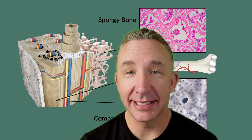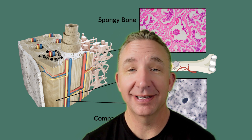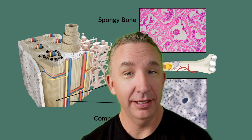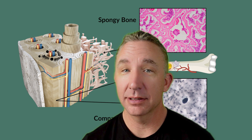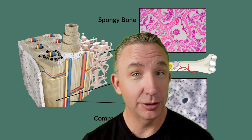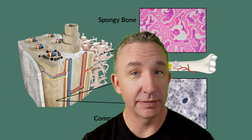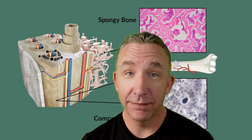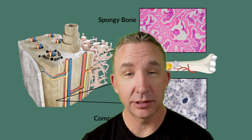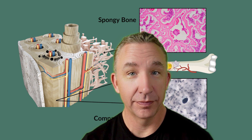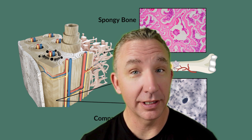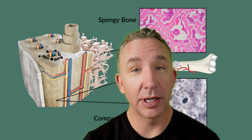There are two types of bone or osseous tissue: spongy bone and compact bone. To understand how we get here — there are four types of tissue in the body: epithelial, connective, muscle, and nervous. Under connective tissue, there are three types: connective tissue proper, fluid (blood and lymph), and supporting connective tissue. Supporting connective tissue includes cartilage and bone. There are three types of cartilage: elastic, hyaline, and fibrocartilage. Now we're looking at bone — two specific types: spongy and compact.